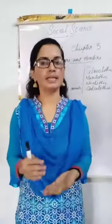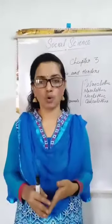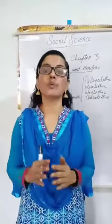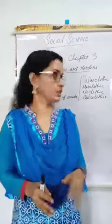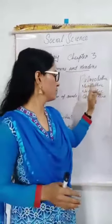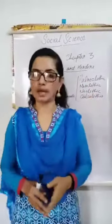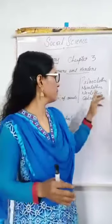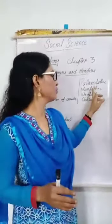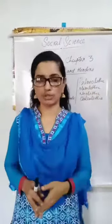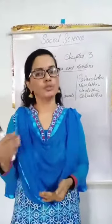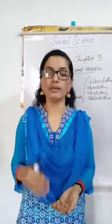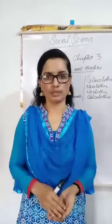We are studying about the evolution of mankind. There are four periods of evolution: the Paleolithic age, Mesolithic age, Neolithic age, and Chalcolithic age. We have already studied about the first two ages — Paleolithic and Mesolithic. Now we are going to study the third one, Neolithic, and the fourth one, Chalcolithic.